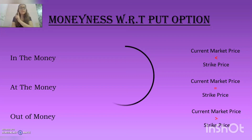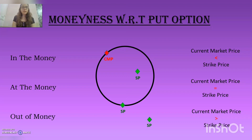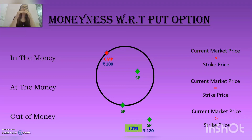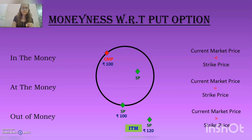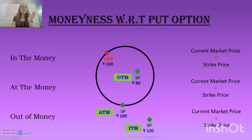Let's look at this through the same circle diagram. With a current market price of 100 and a strike price of 120, the current market price is less than the strike price — this is 'in the money' for put options. Notice that in call options, 'in the money' was inside the circle, whereas in put options it comes outside the circle, because call and put are opposites of each other. With a strike price of 100, the current market price equals the strike price — 'at the money,' the same for both calls and puts. With a strike price of 80, the current market price is more than the strike price — this is 'out of the money' for put options.